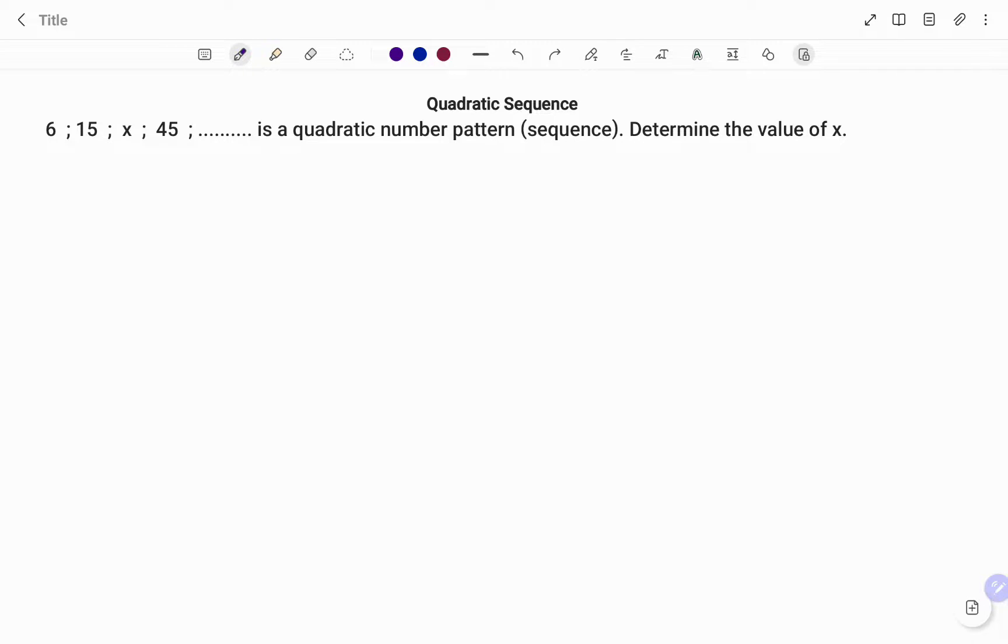The quadratic pattern or sequence nth term formula is an² + bn + c. When you have a quadratic pattern, what is unique is that the second difference is always the same.